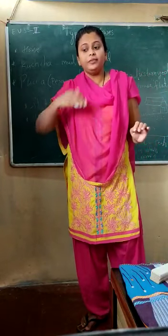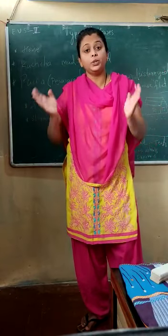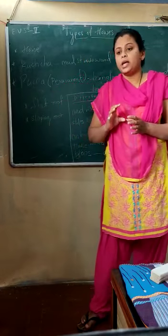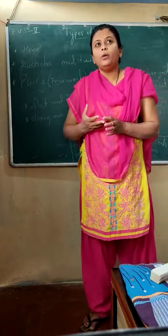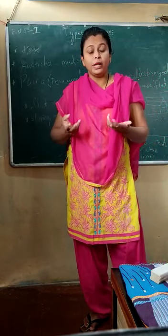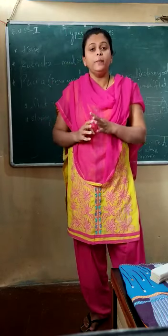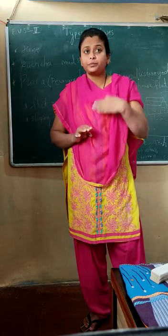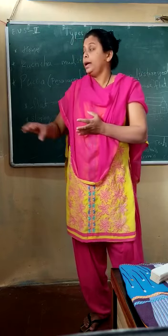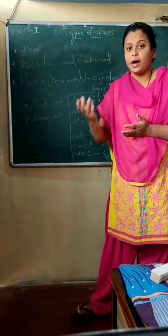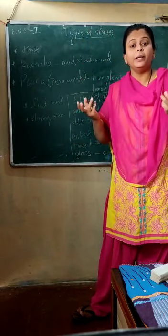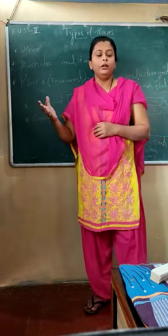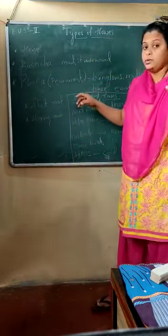Kaccha houses are not at all permanent. After some years or days they are going to fall down and be destroyed by themselves — by rain, by the hot sun. Before, very poor people who didn't have money to purchase cement used to build like this. Nowadays it's not common, but in earlier times it was. We can also build kaccha houses on a farm for a temporary reason, since we are not going to stay there permanently.